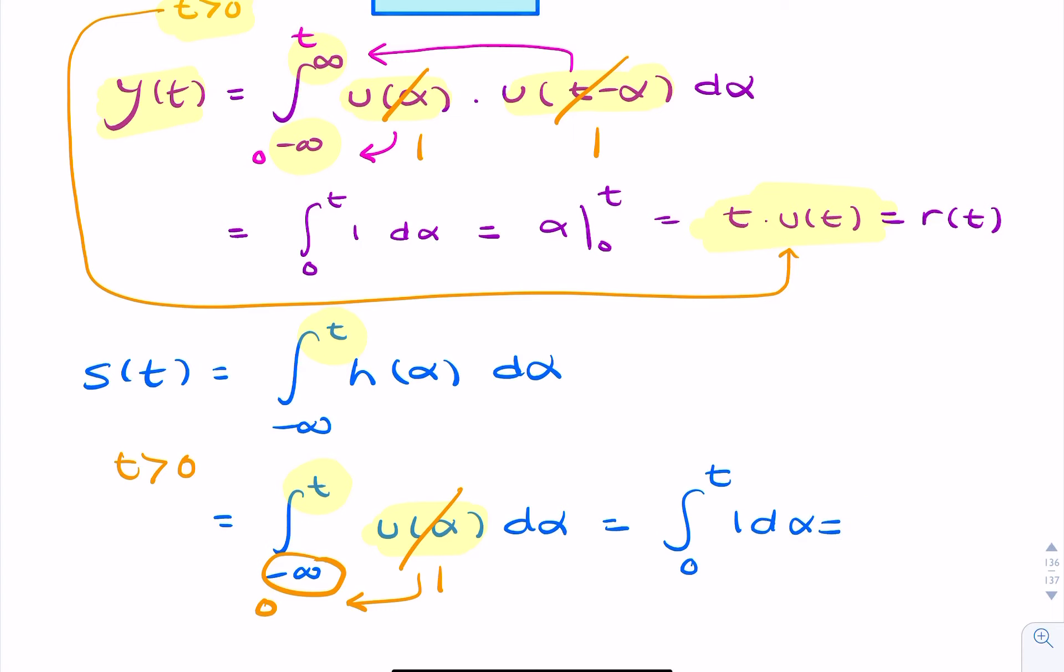So we're exactly in the same place we were a minute ago. So we have our final result, T U of T. Where did the U of T come from? Well, it comes from our recognition that T has to be greater than 0.